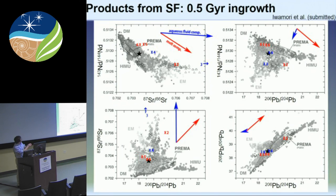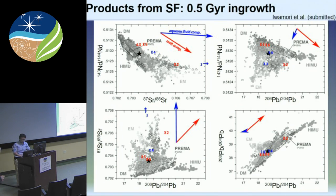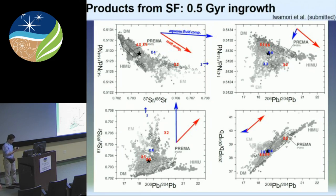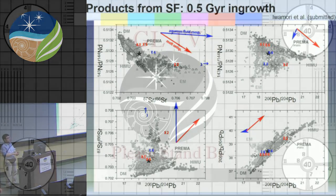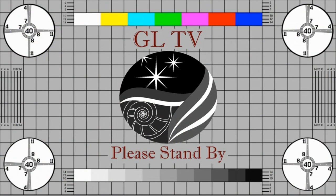We don't know yet when plate tectonics started, but it was probably quite old, so we already had significant mantle heterogeneity at least 500 million years ago. So we can start not from anywhere, but from quite variable starting points. Then if we overlap these vectors for those variable starting points, we can cover a large portion of the observed data distribution. Does that make sense? Thank you very much.